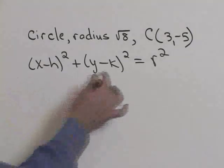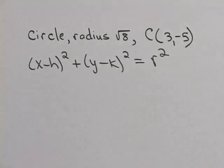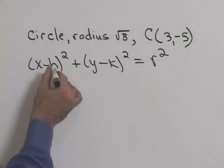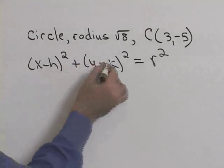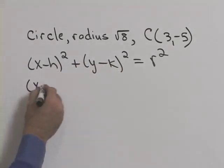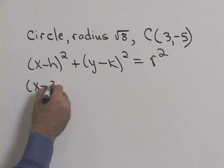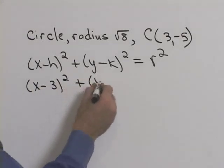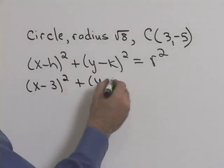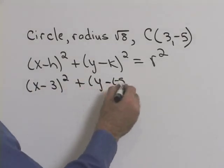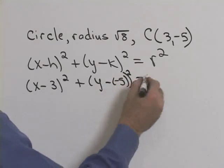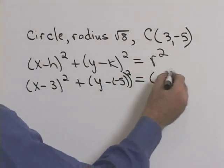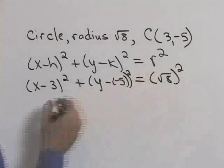Here's the standard form of an equation for a circle. Let's plug in our center of (3, -5). So we'll have x minus 3 squared plus y minus negative 5 squared equals our radius, which is the square root of 8, squared.